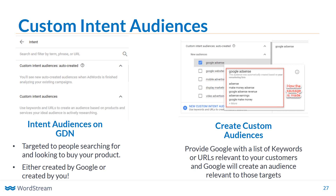This is also really interesting competitively — I could create a custom intent audience around people who are visiting my competitors' websites, then target my ads to them based on the fact that they were interested in those sites. I could reach them even if they've never been to my website before. This is not remarketing — it's the next step beyond remarketing: people who have not yet been to your site but are very interested in your product or service.